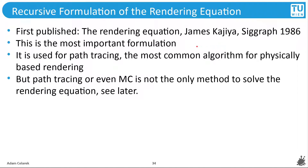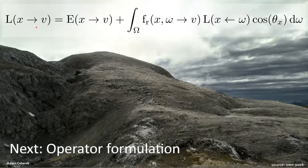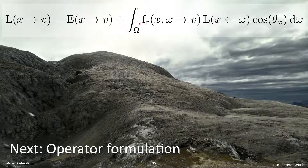This is the most important formulation of the rendering equation, used for path tracing — the most common algorithm for physically based rendering, used by all Hollywood studios. Path tracing, or even Monte Carlo, is not the only method to solve the rendering equation. To summarize: the exitant light at point x into direction v equals the light emitted plus the integral over the hemisphere of the incident light over all angles, times the cosine weighting, times the BRDF.